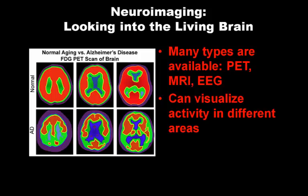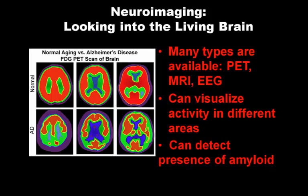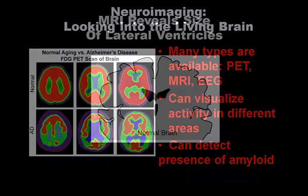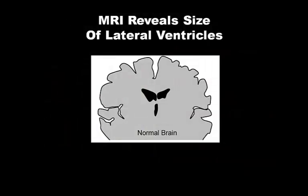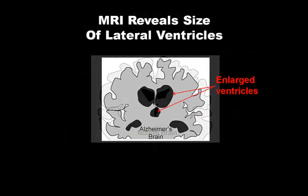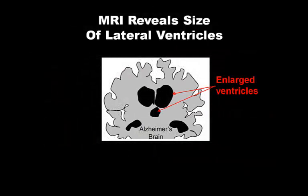Other approaches can detect amyloid in the brain. As another example, the enlargement of brain ventricles that occurs during Alzheimer's can be seen using MRI, as shown in these diagrams. They are commonly referred to as holes in the brain that result from brain cell death.